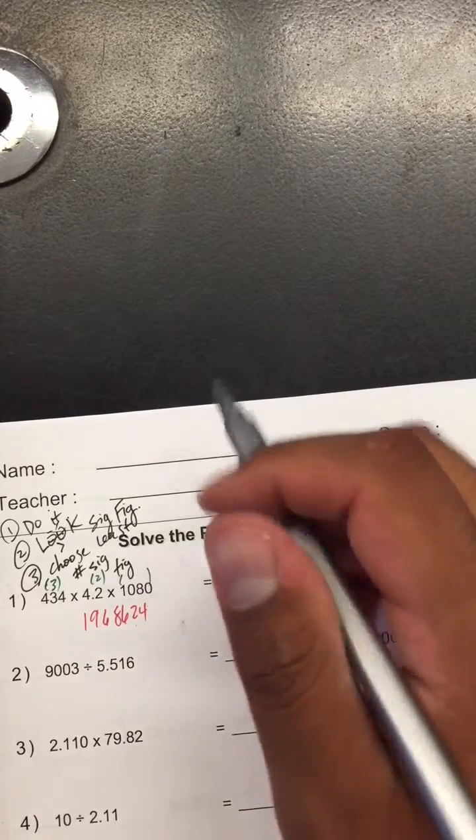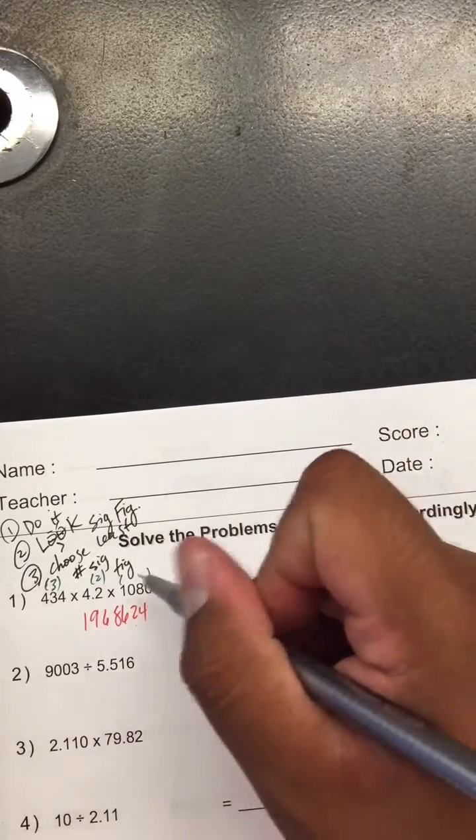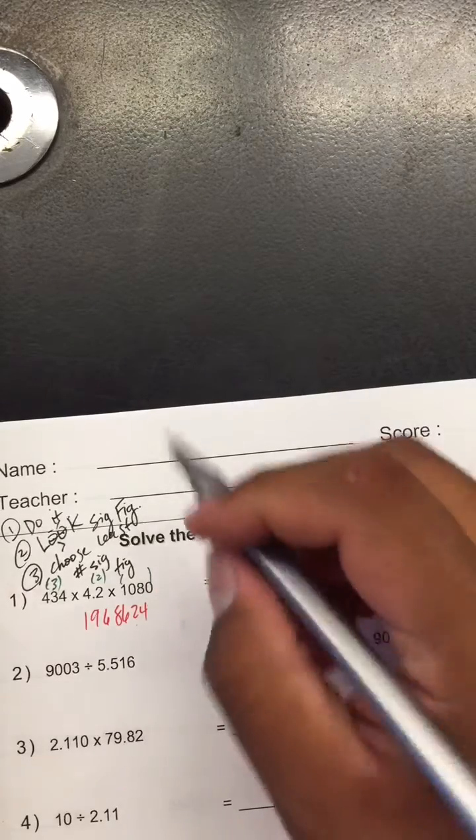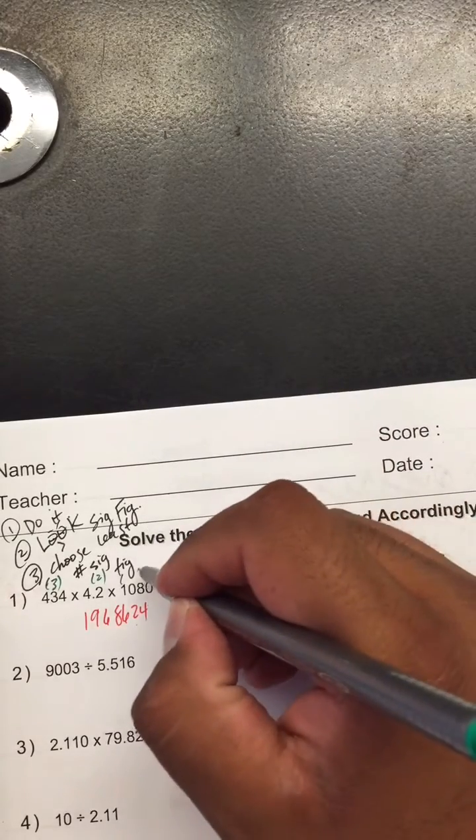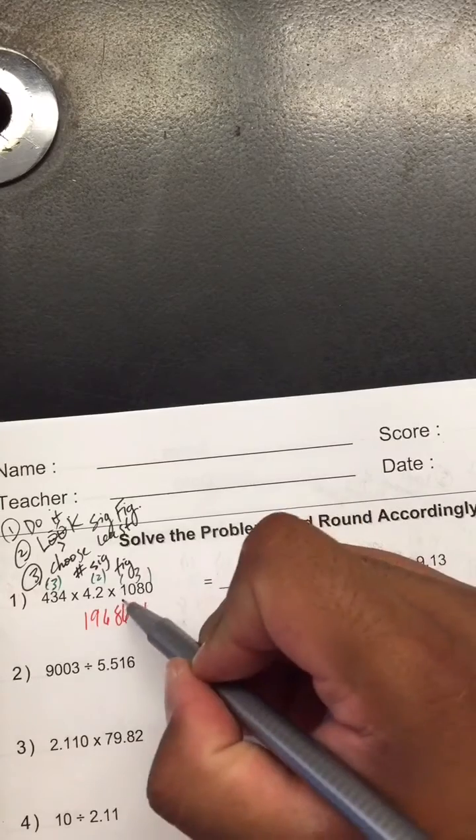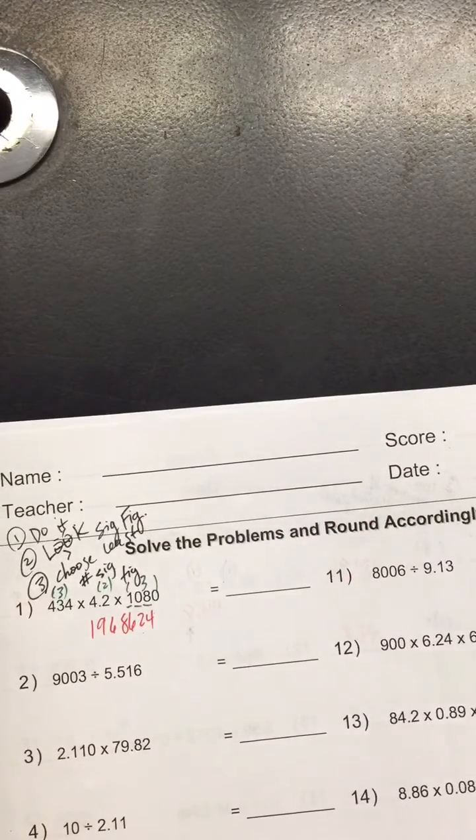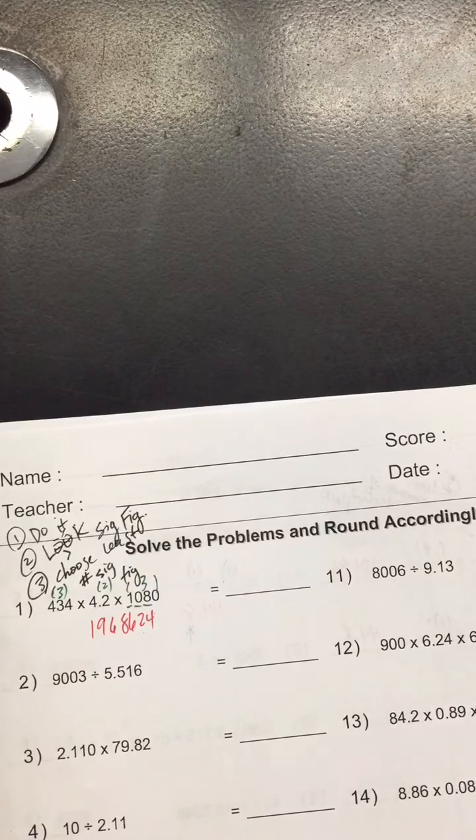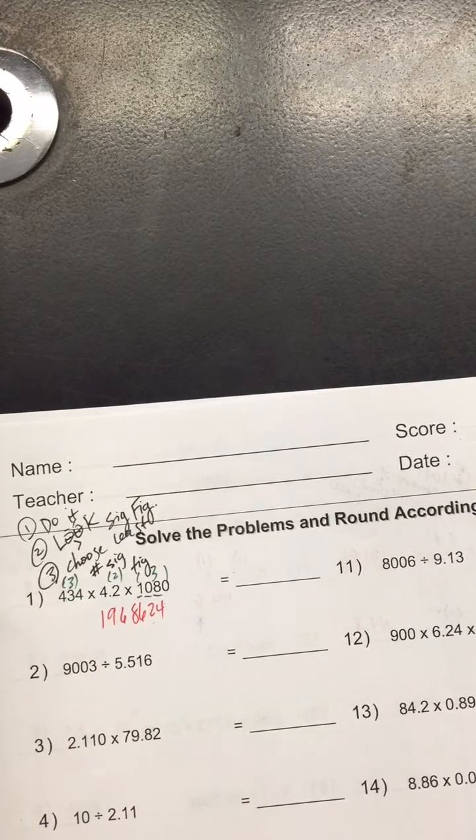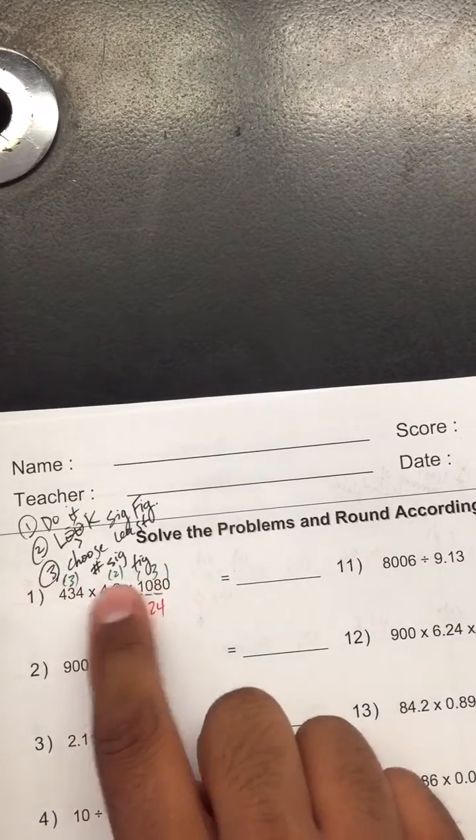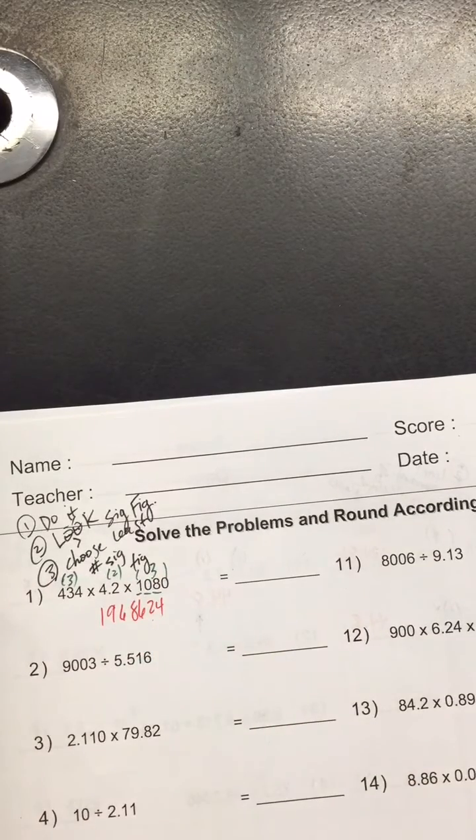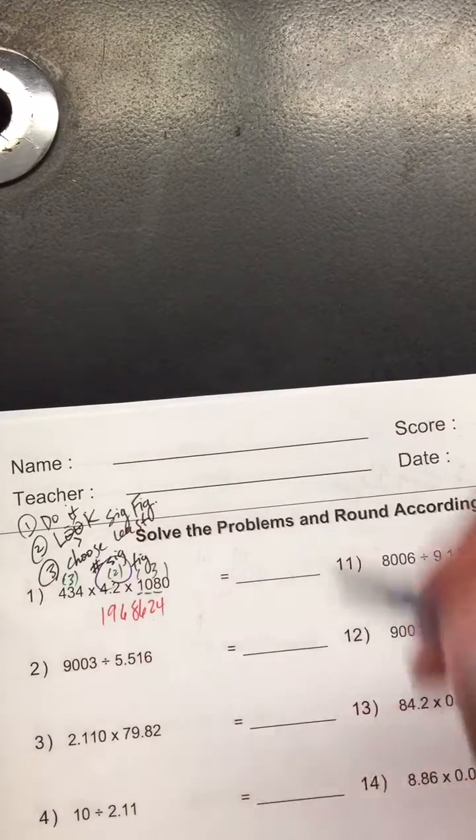I'll give you a little bit of time to see if you can determine how many this one has. You might want to say that it's four, but it's not, it's three. This one, this one, and that one. Remember that zero does not count because there's no decimal. So we got three, two, and three. We're gonna choose the least one, and the least one of course is two sig figs.